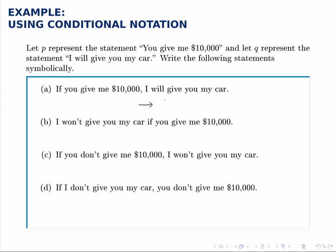In the first statement, if you give me $10,000, so that's the P, if P, then I will give you my car, which is Q. So if P, then Q, which you could also read P implies Q, or Q follows from P, things like that. But if P, then Q is the standard.